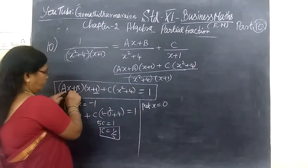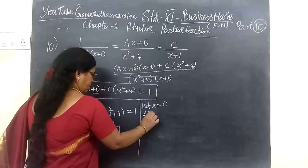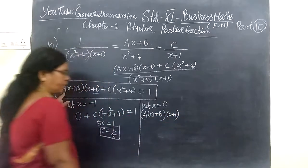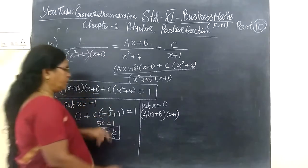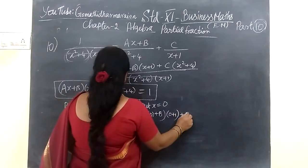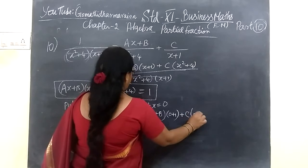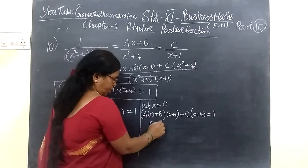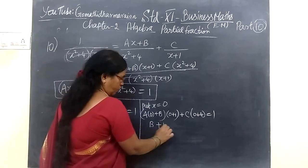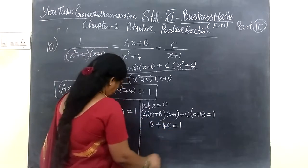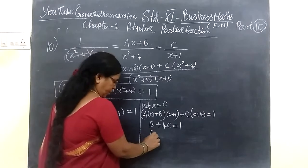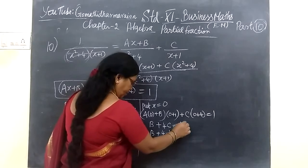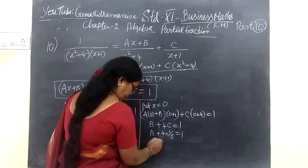And this is 0x. A bracket 0, then B times 0 plus 1, by x times you are writing 0 plus C bracket 0 plus 4 equals to 1. So just write B then 4C equals to 1. C value 1 by 5, so 4 into 1 by 5 equal to 1, which implies B.